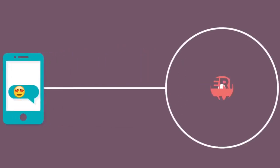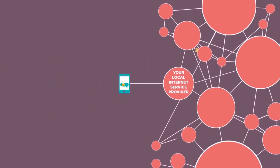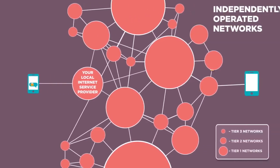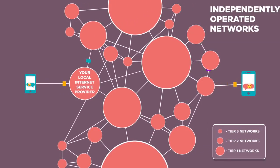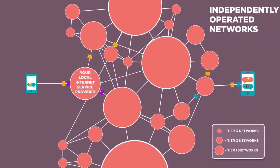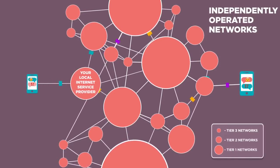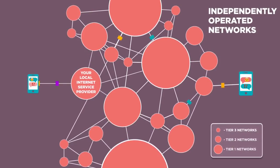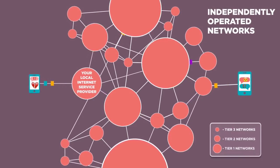Is anybody in charge of the internet? The honest answer is: nobody — or maybe everybody. The real answer is that the internet is made up of an incredibly large number of independently operated networks. What's interesting about the system is that it's fully distributed; there's no central control deciding how packets are routed, where pieces of the network are built, or even who interconnects with whom. These are all business decisions made independently by the operators.